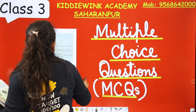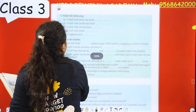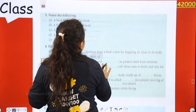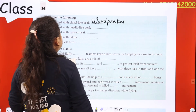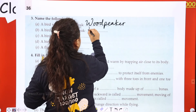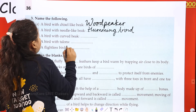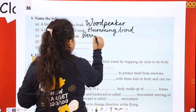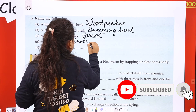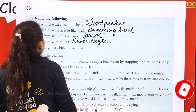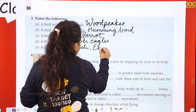Turn to page number 36. Question 3 — name the following: A bird with a chisel-like beak is the woodpecker. A bird with a needle-like beak is the hummingbird. A bird with a curved beak is the parrot, which cracks open nuts. A bird with talons is the hawk or eagle. A flightless bird is the ostrich or emu.